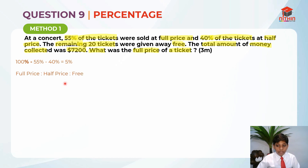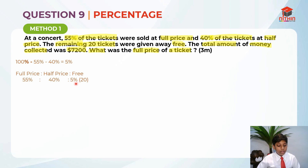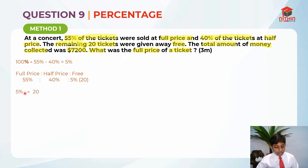Full price to half price to free is basically 55% to 40% to 5%. We know that the free 5% is equal to 20 tickets. So 5% represents 20.